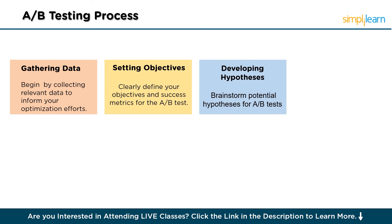Next is developing hypotheses. With your objectives in mind, brainstorm potential hypotheses for the A-B test. Propose theories on why certain changes might outperform the existing version of your website or app, then rank these ideas based on their potential impact and the effort required for implementation. Developing clear hypotheses helps guide your testing strategy and ensures that your experiments are focused and purposeful.